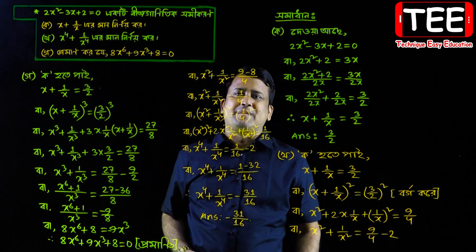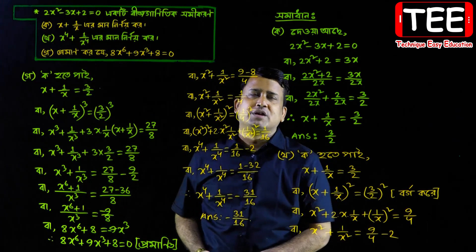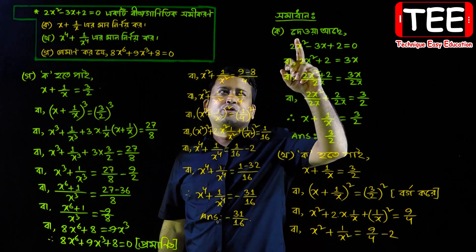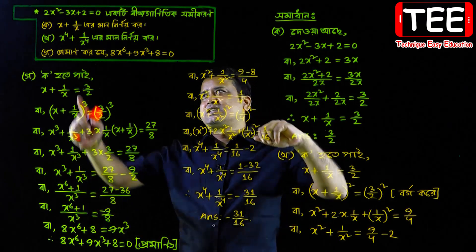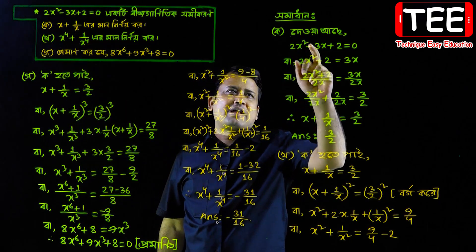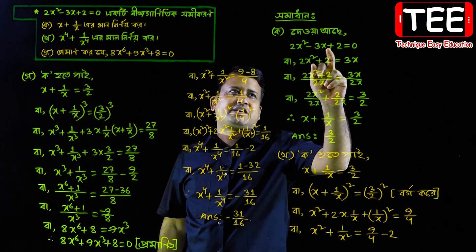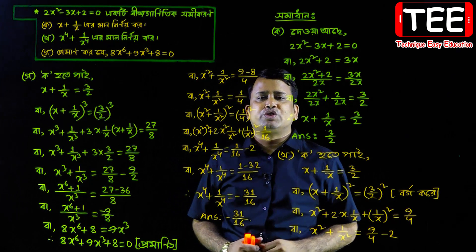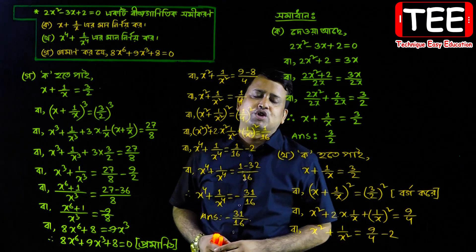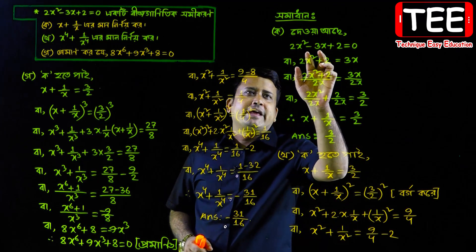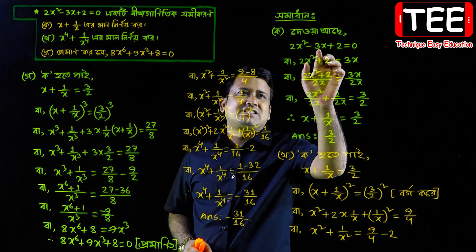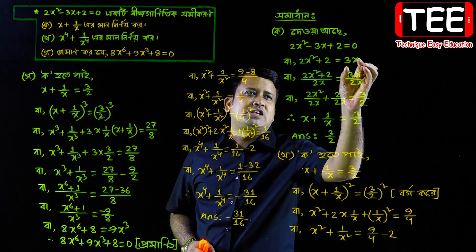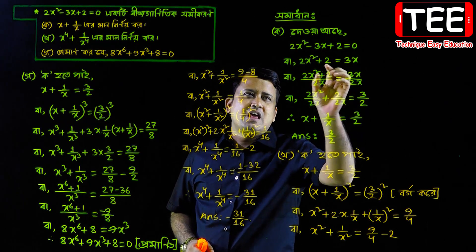x plus 1 by x is minus n. So I have to write 2x square minus 3x plus 2 equal to 0. If you can get this minus 3x, I have to write 2x plus 3x.